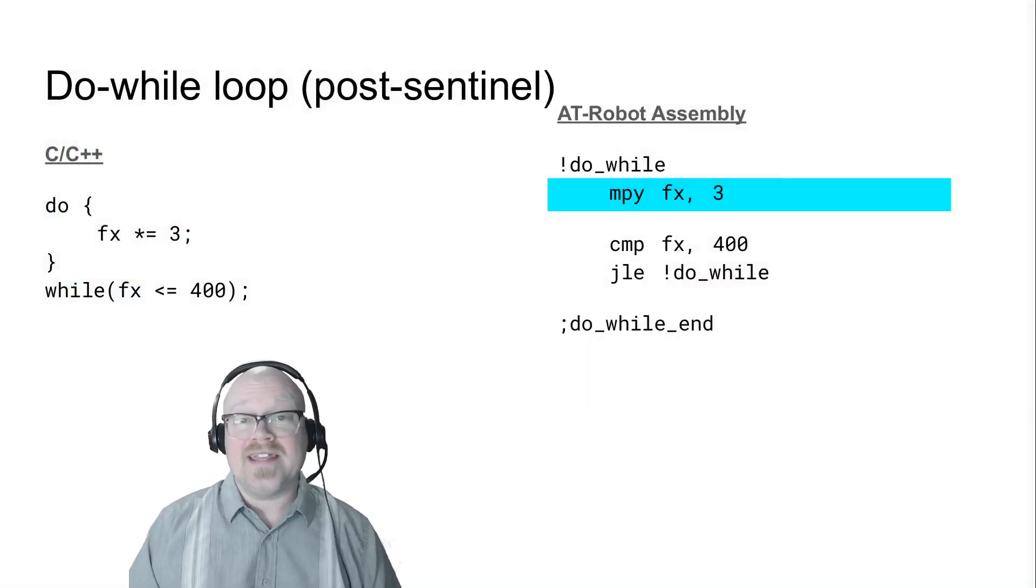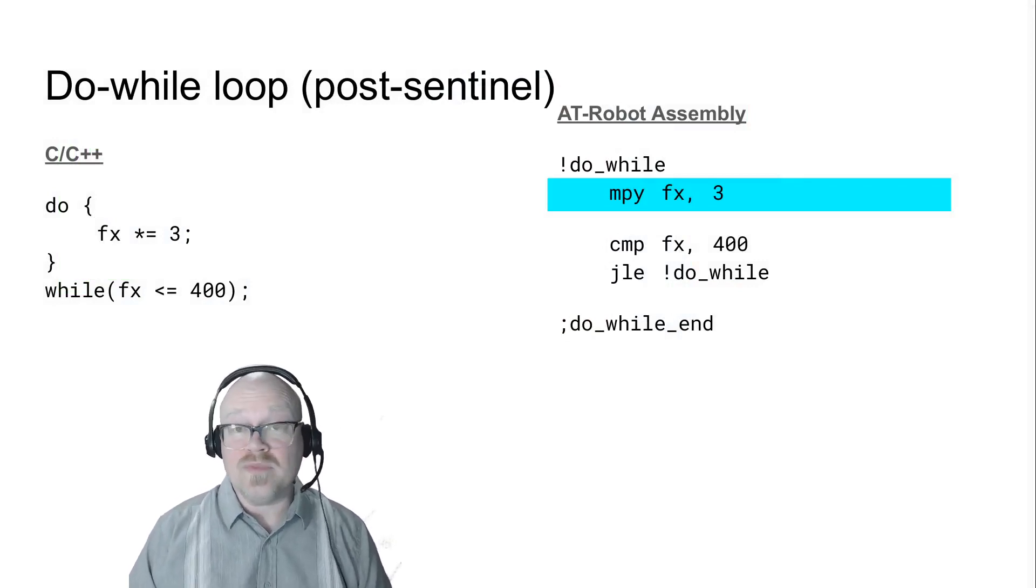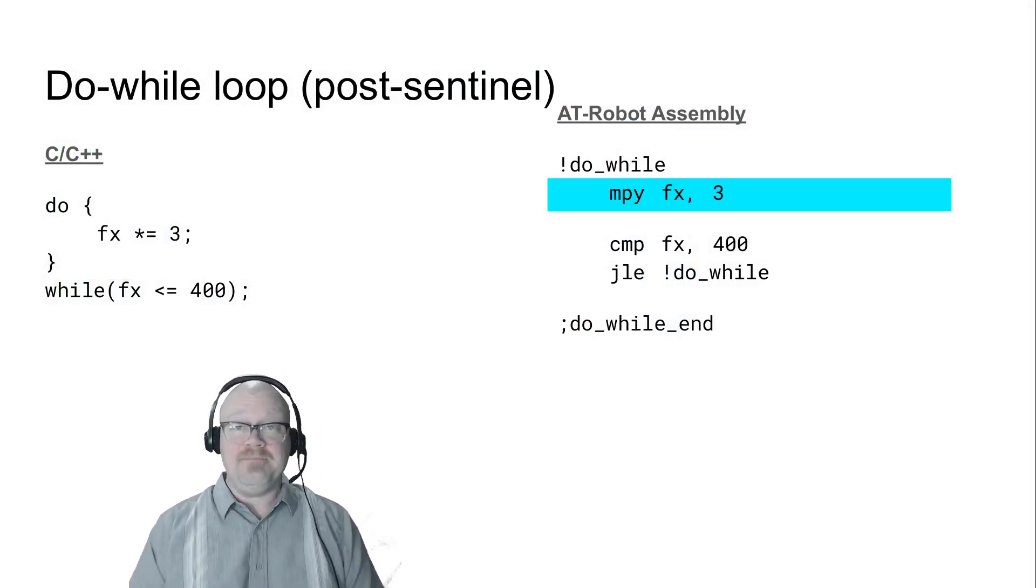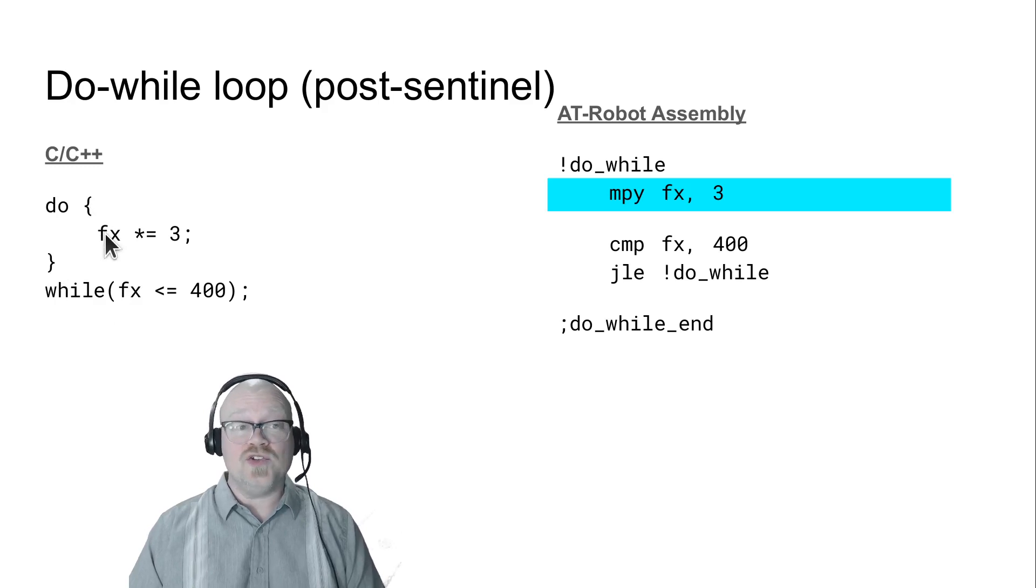The first type of loop I want to look at is the post-sentinel do-while loop. This is a data-driven loop. It executes at least one time, so we fall into the do immediately, run the contents of the loop, and then we check our sentinel condition at the end. As long as that condition is true, we jump back up to the top and run through the meat of the code again. When that loop condition fails, we fall through and move on through the rest of the code.